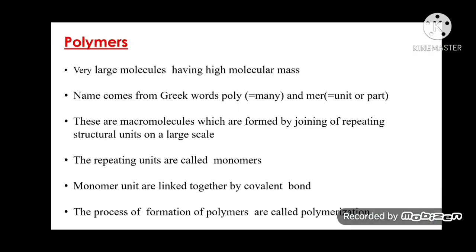Polymers are very large molecules having very high molecular mass. The name comes from the Greek words 'poly' and 'mer', where poly means many and mer means unit or part. These are macromolecules which are formed by joining of repeated structural units on a larger scale. These repeating units are called monomers. Monomer units are linked together by covalent bonds. The process of formation of polymers is called polymerization.